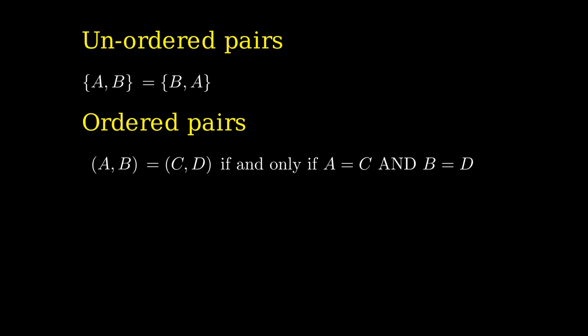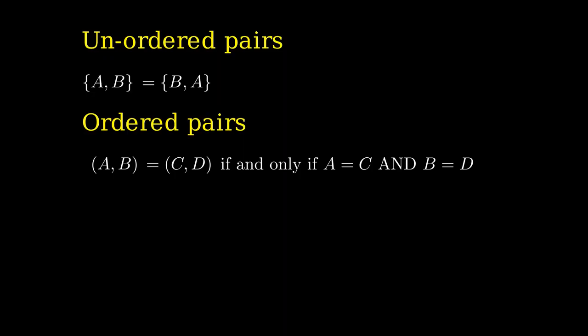So how do we define ordered pairs using axioms and sets? You might want to pause the video before seeing the solution. Here's a possible definition: you can define the ordered pair (A, B) as the set whose elements are A and the pairing {A, B}. Try to prove that this definition satisfies the characteristic property of ordered pairs — and be careful, because you'll need axiom 2 for that proof.